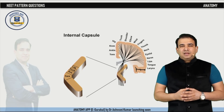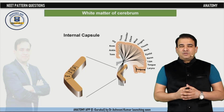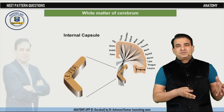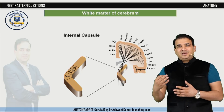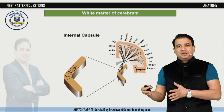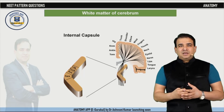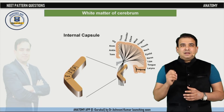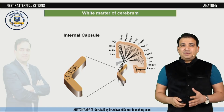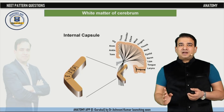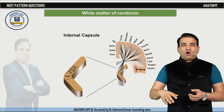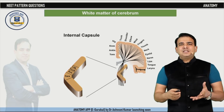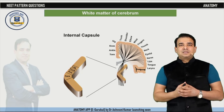Finally, regarding the internal capsule: the white matter of the cerebrum can be divided into association fibers, commissural fibers, and projection fibers. Association fibers connect different areas within the same cerebral hemisphere. Commissural fibers, like the corpus callosum, connect functionally corresponding areas in both cerebral hemispheres. The internal capsule is the best example of a projection fiber, carrying corticopetal and corticofugal fibers — those going toward or away from the cortex. Therefore, the internal capsule is a type of projection fiber.